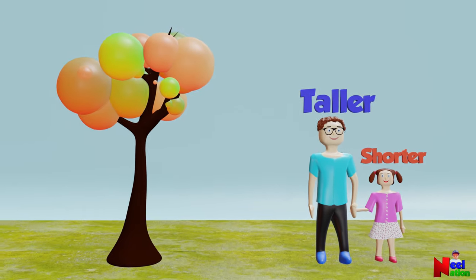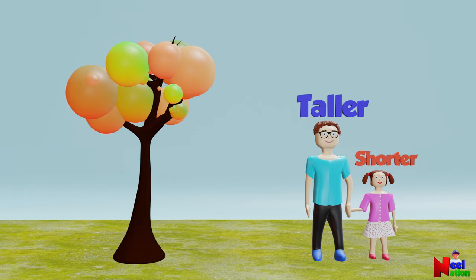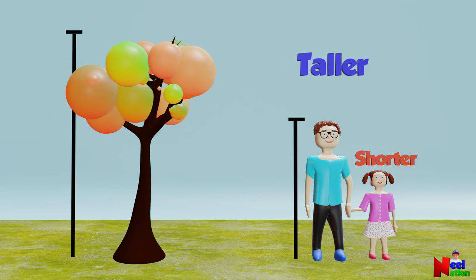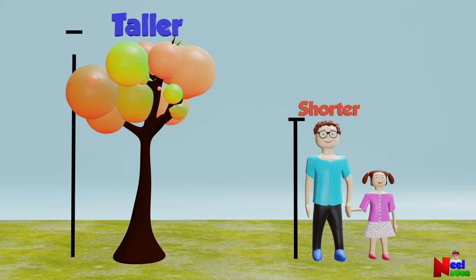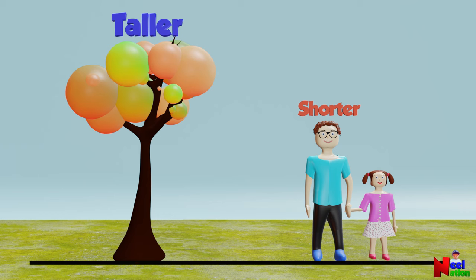Now, in this picture, you have a tree next to John. If you look at the height of the tree and John, you can say that the tree is taller than John. In other words, John is shorter than the tree. When you compare heights, make sure they have the same starting point.